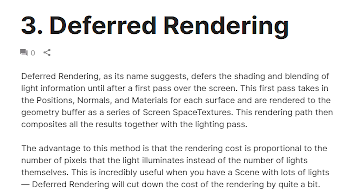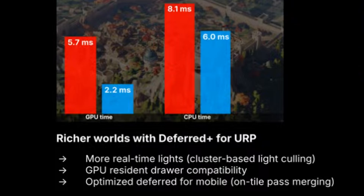Deferred Plus takes this a step further by using cluster-based light culling. The screen is divided into 3D clusters, the engine tracks which lights affect each cluster, and this dramatically reduces the number of lighting calculations needed because the engine only processes lights that actually affect a given area. The long and short of it is your games can handle dozens or even hundreds of dynamic lights with much better performance. Keep in mind Deferred Plus is still targeted towards stronger GPUs, so it's mainly beneficial for PC and console projects rather than mobile.